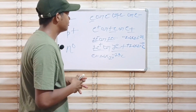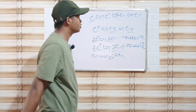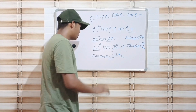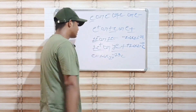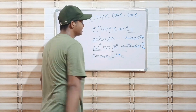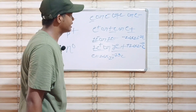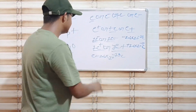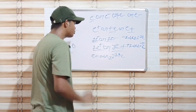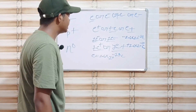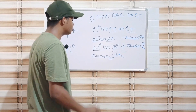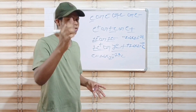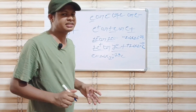1 e negative ka numerical maan negative 1.6 into 10 to the power negative 19 coulomb hoga. 1 e positive ka numerical maan positive 1.6 into 10 to the power negative 19 coulomb hoga. 'e' certain charge 1.6 into 10 to the power negative 19 coulomb ka symbol hai.